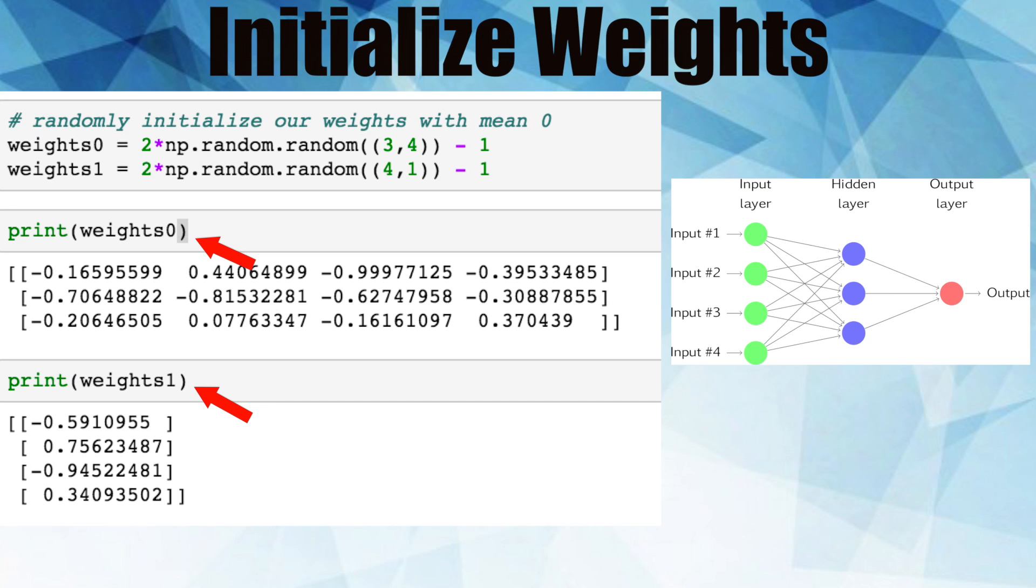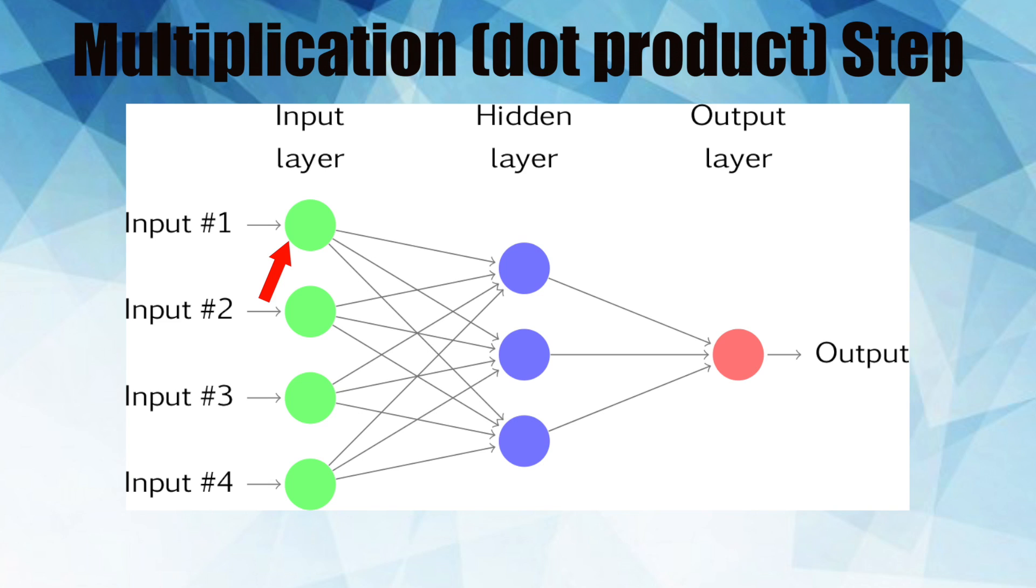We can initialize these weights as matrices with random values to start off with. We'll multiply each row of the input by each column of our weight matrix. The resulting values from this operation results in our hidden neuron values.